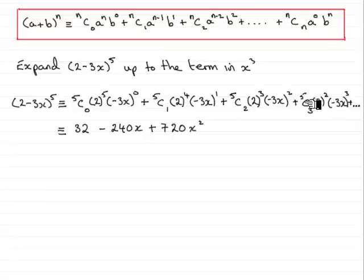So, we have 5c3. That's 10. 2 squared is 4. Minus 3x all cubed. Be careful here. That's going to be minus 27x cubed. Multiply that all together. And, what you have is minus 1080x cubed. And, don't forget to put plus and so on because there's going to be some more terms there.